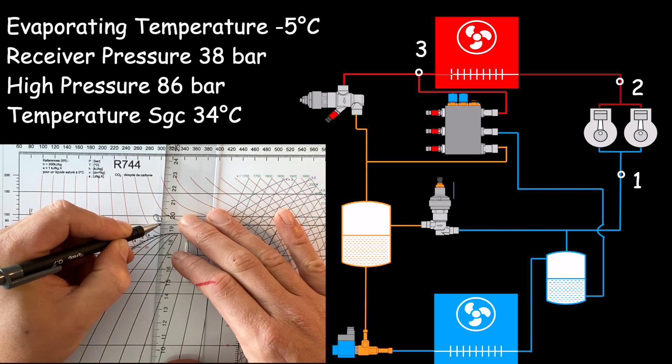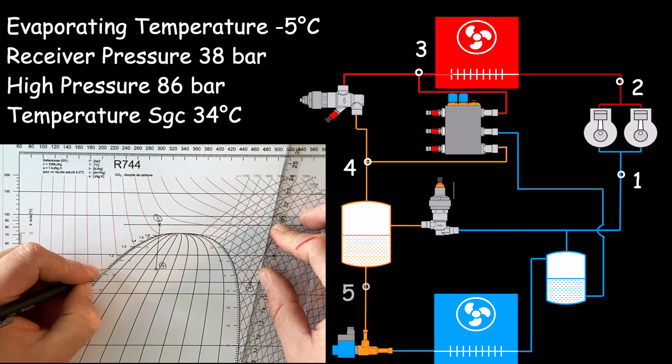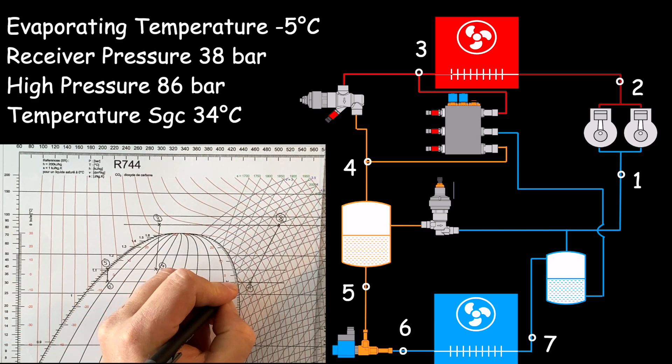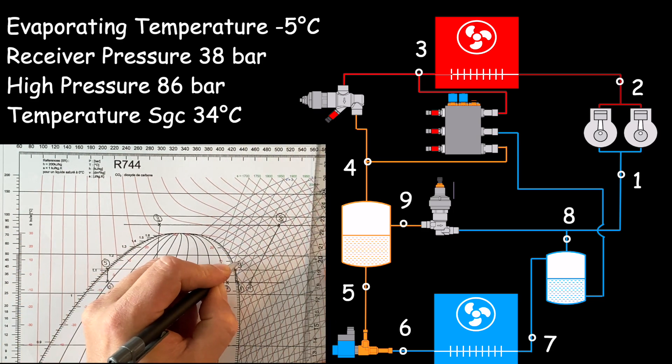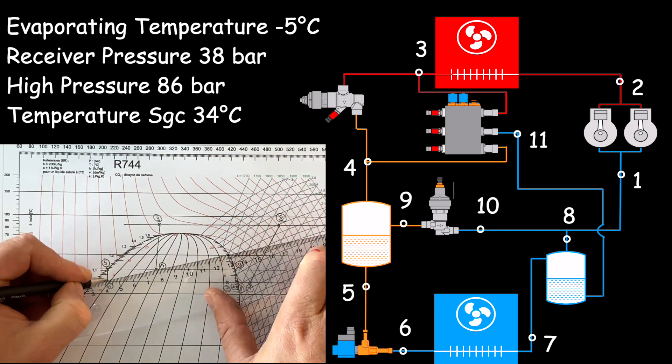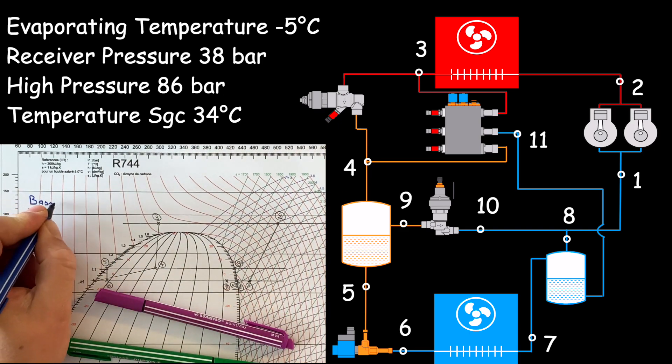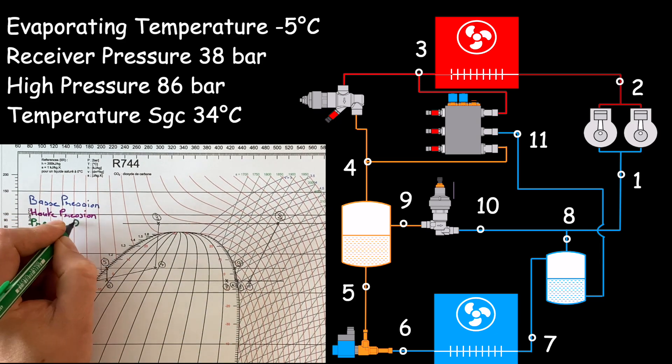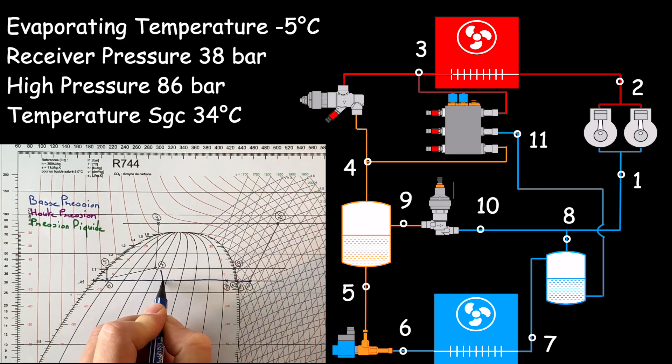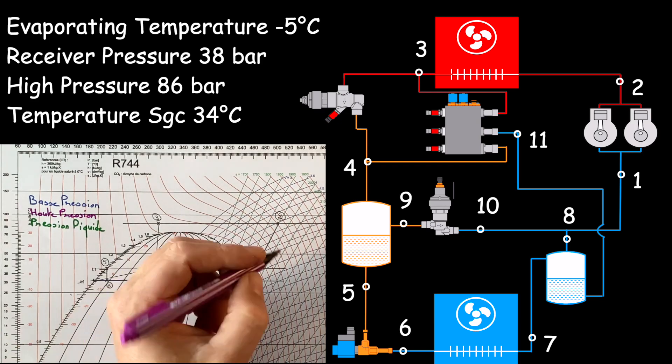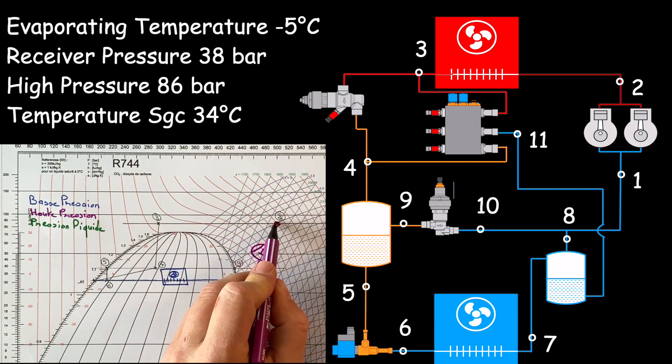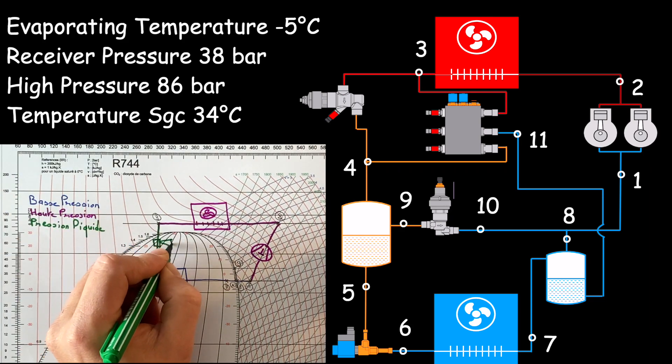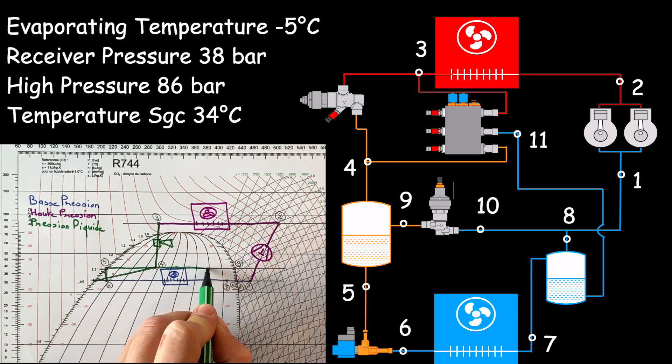The high pressure is used as motive flow. In summer with ambient temperature equal to 32 degrees, CO2 will be at 34 degrees at the outlet of the gas cooler with a pressure of 86 bars. The receiver will be maintained at 4 degrees, meaning 38 bars, and an evaporation pressure of 30 bars will be maintained by compressor, which represents minus 5 degrees.